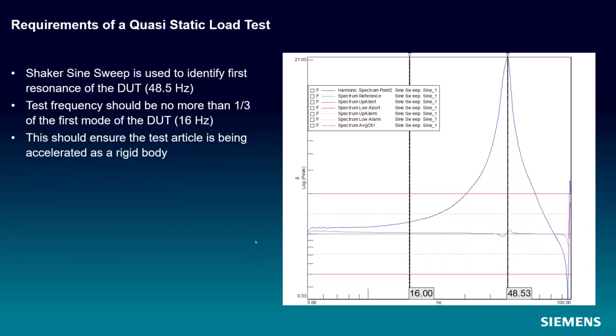Here's what we need to do for this quasi-static load test. We need to come up with a pulse. And in order to come up with a pulse, we need to figure out what the first mode of the spacecraft is. Now, we can do this from some FE data or we can do this experimentally by doing a low-level sine sweep. Again, something that's typically done anyway when you're doing a shaker test. We'll do a low-level sine sweep and figure out what our first structural mode is. On this little demo that I have here, that first mode's around 48 hertz.